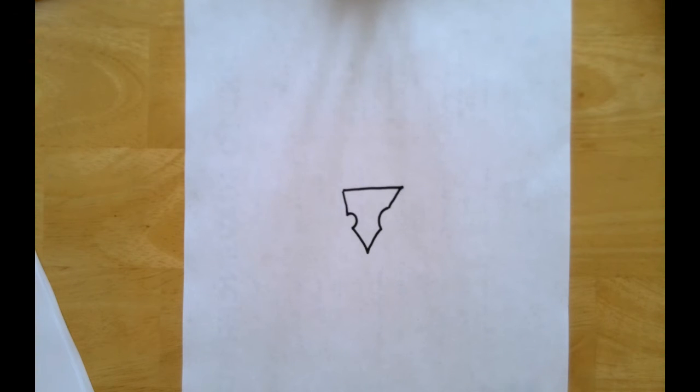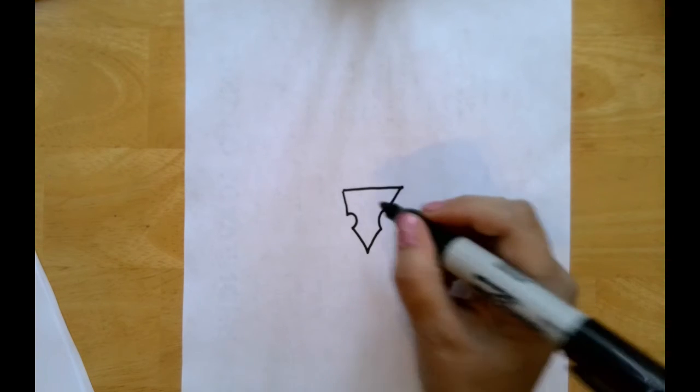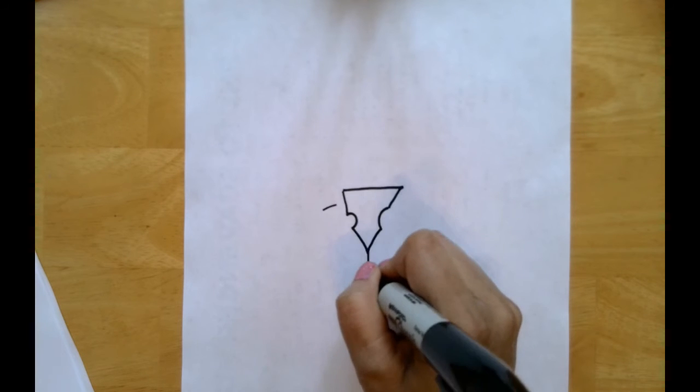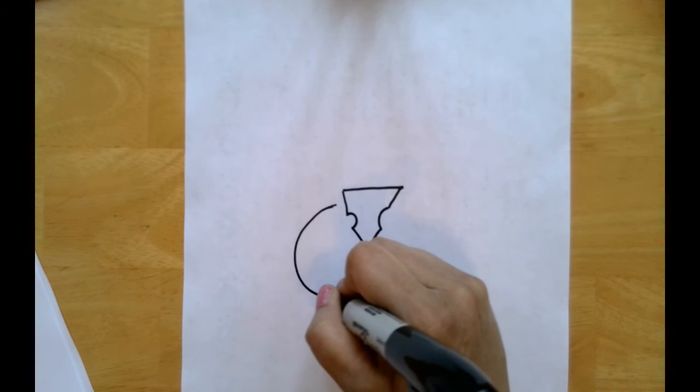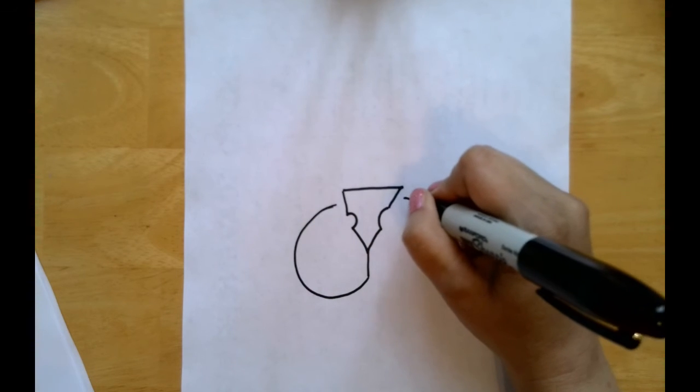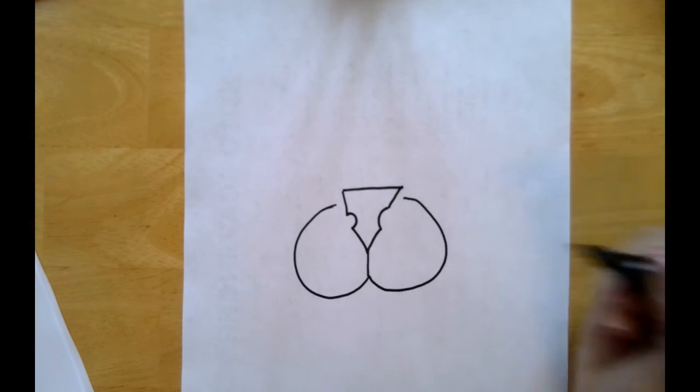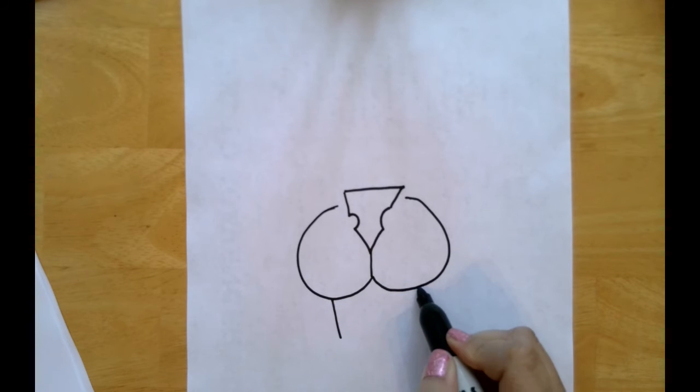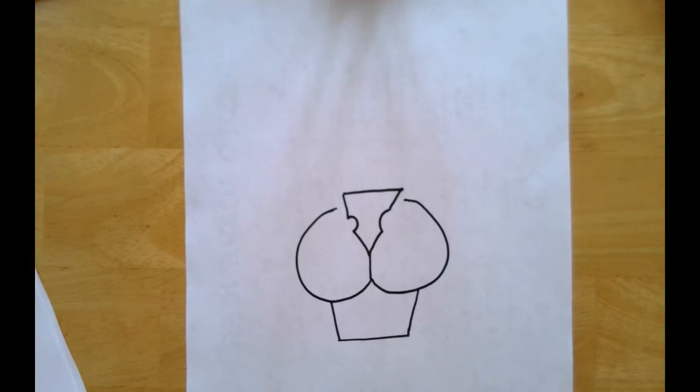The nostrils. And now we're going to do the cheeks and the lower jaw, and they go down from the nose. So I'm going to go here, take it here, I'm going to go around. Okay, pretty happy with that. And then I need his jaw. To me it looks like a cupcake, but this is just the beginning.